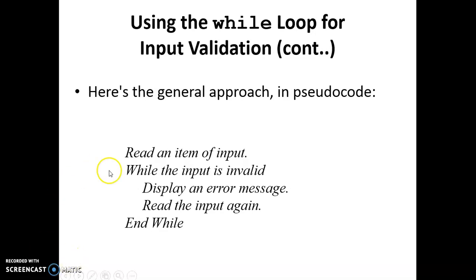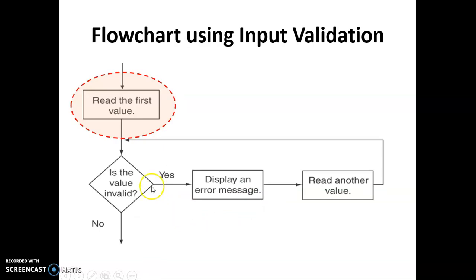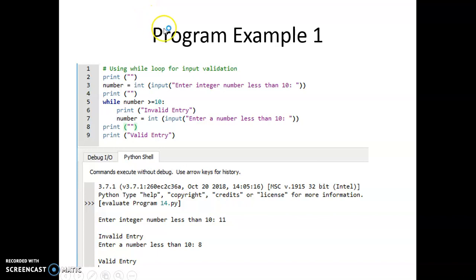The pseudocode for the general approach to input validation is: read an item for input; while the input is invalid, display an error message and read the input again. The flowchart shows: check if the value is invalid — if so, display an error message (parallelogram shape), read another value, and loop back until the user enters a valid number.